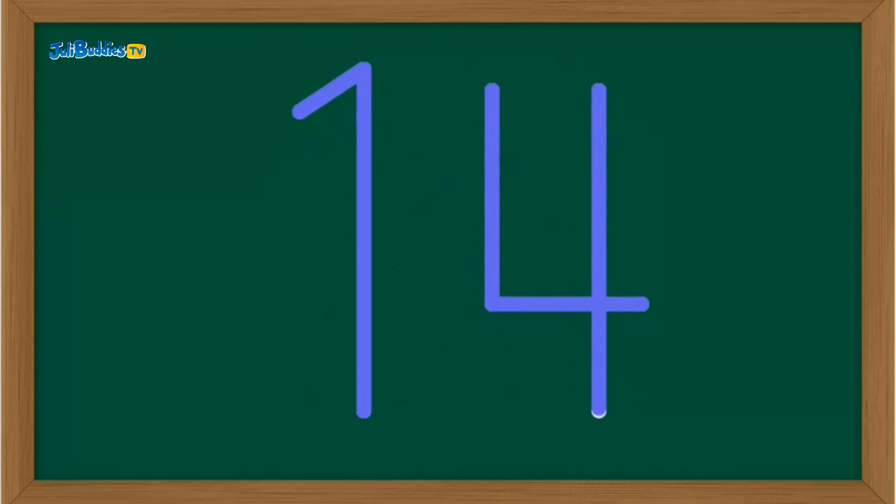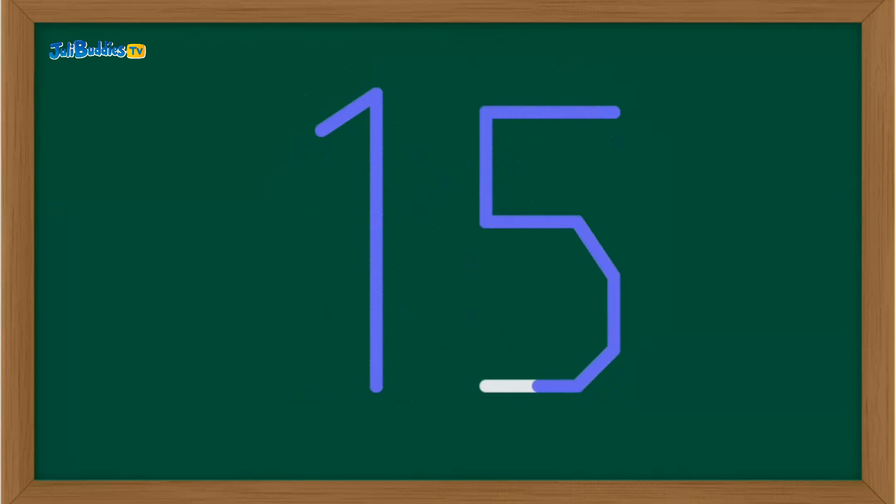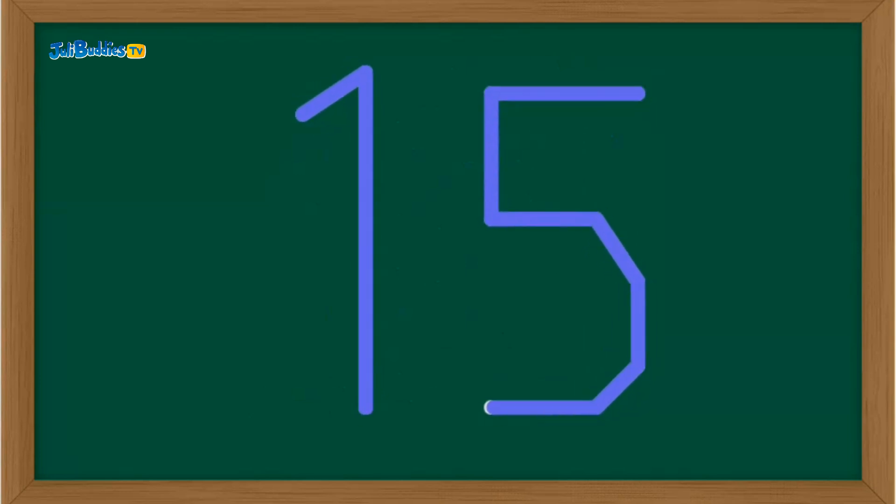Look! It's fifteen. A one and then a five. Line across, line down, and then a big curve. You're super smart. That's fifteen.